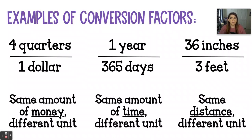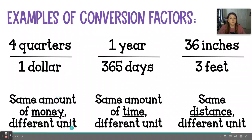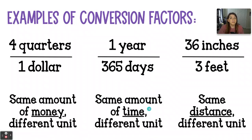Looking more into conversion factors — because I know it trips a lot of people up — the quarters represent the same amount of money, just using a different unit. Same thing with one year and 365 days: they represent the same amount of time, but in different units. And 36 inches and three feet represent the same length or distance, but again in different units. That is what makes them conversion factors — they are equivalent to each other.